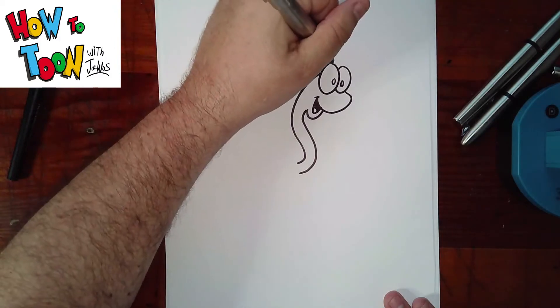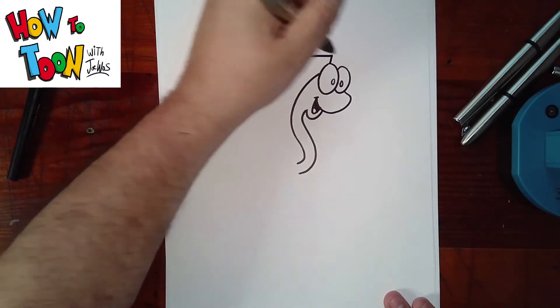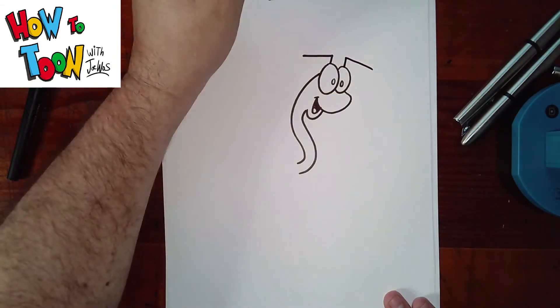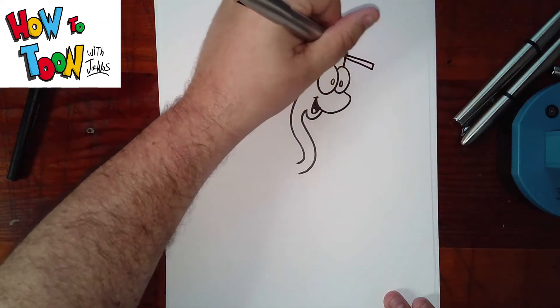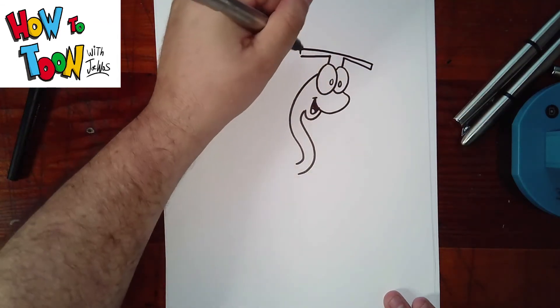Now the graduation cap, up, it's a letter L on its side, up, letter L on its side, up, over, and connect, and then shade in.